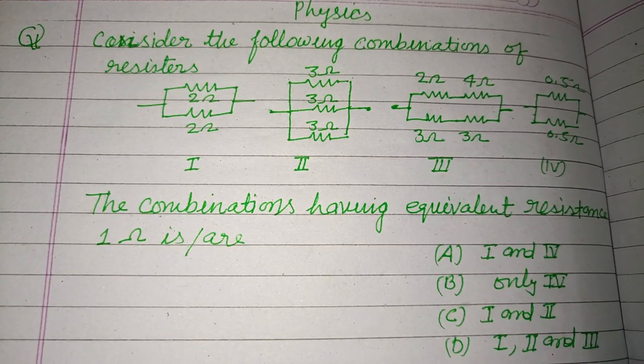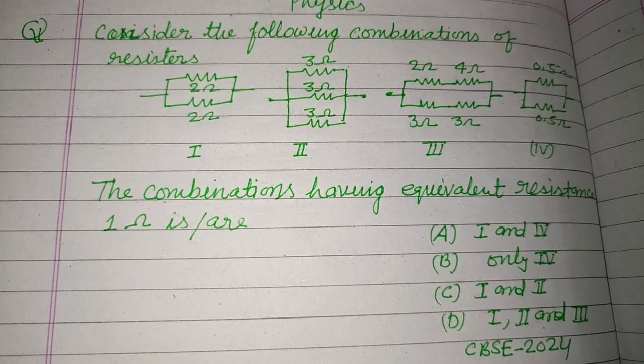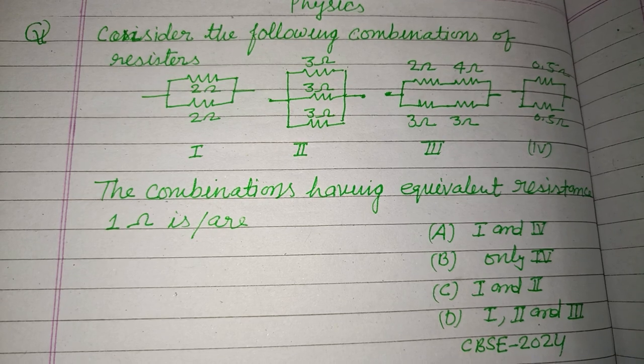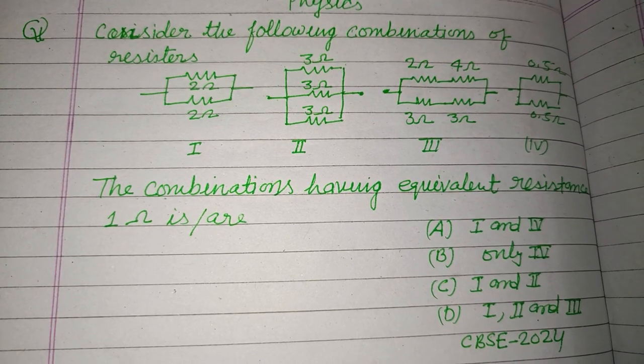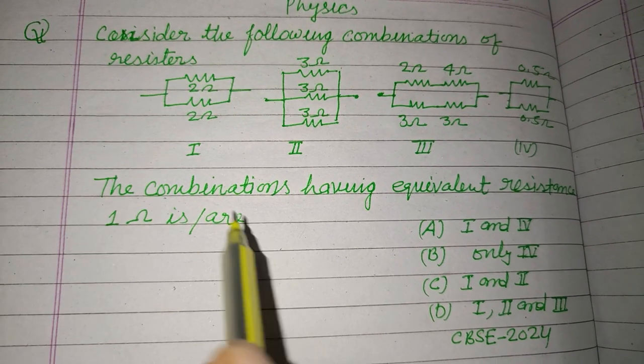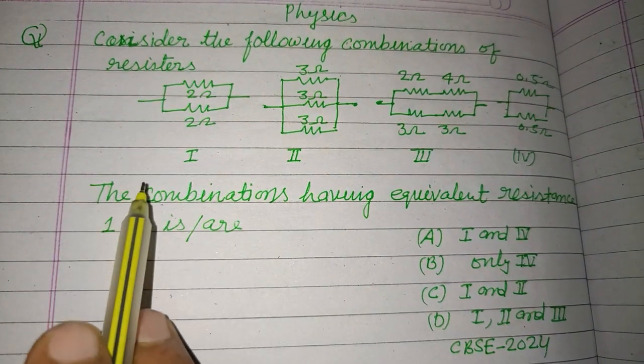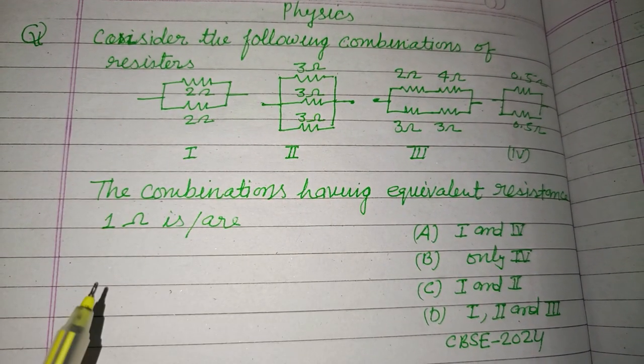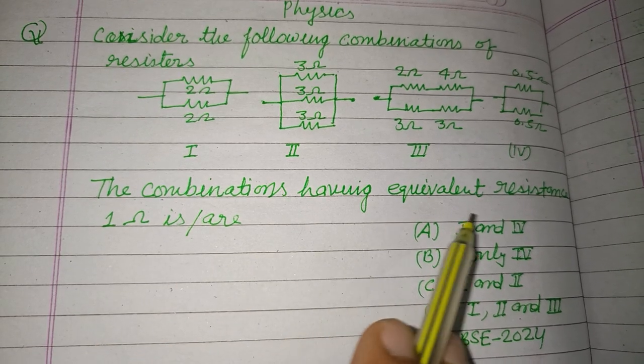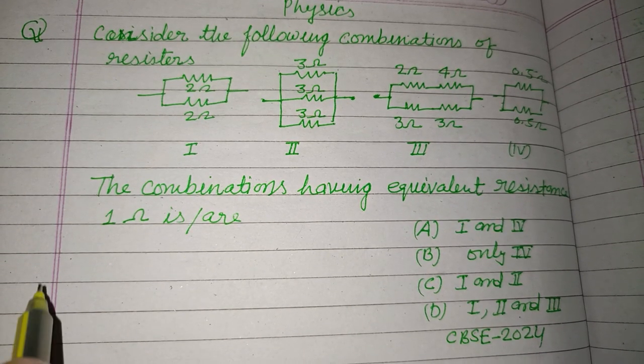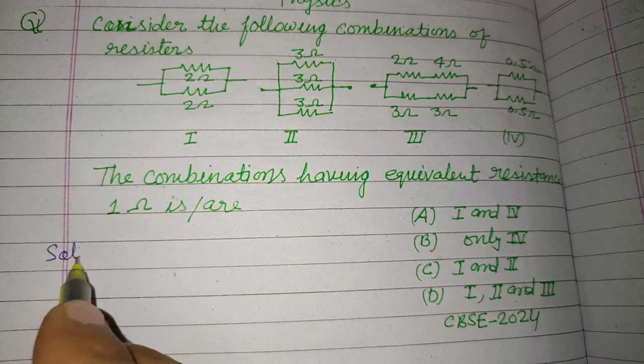Hello viewers, warm welcome to this YouTube channel. This is a question from CBSE board exam 2024, class 10. Consider the following combinations of resistors. Here are four combinations. The combinations having equivalent resistance 1 omega is... so we need to detect which combination has equivalent resistance 1 omega.